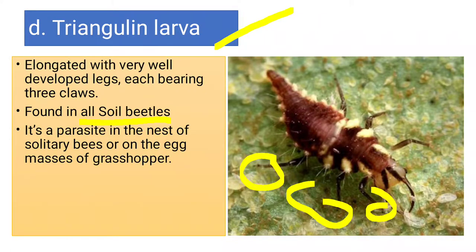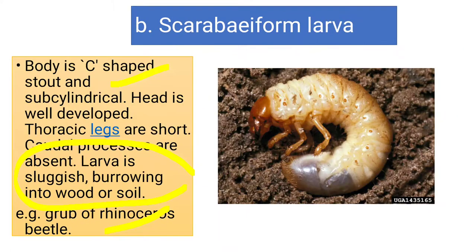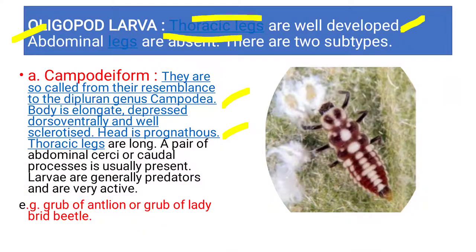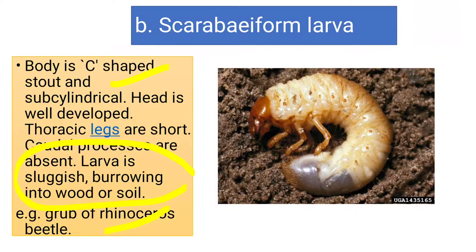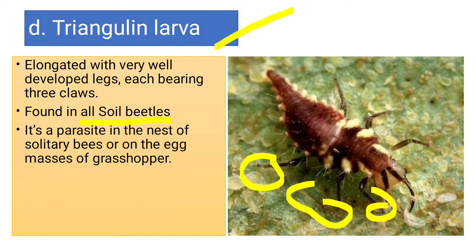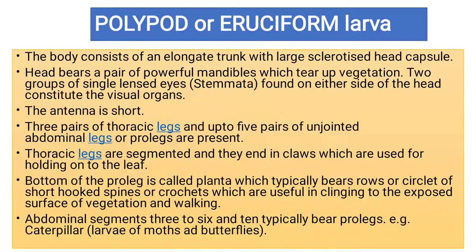So this was all about oligopod larvae. Under oligopod we have four types: campodeiform, scarabaeiform, elateriform, and triangulin larvae.